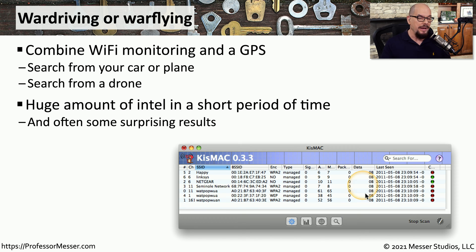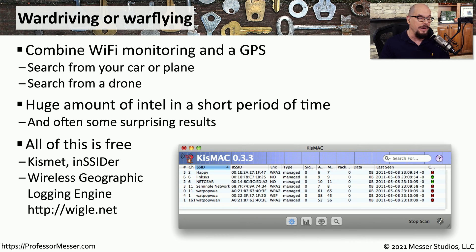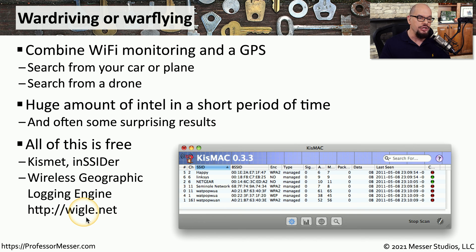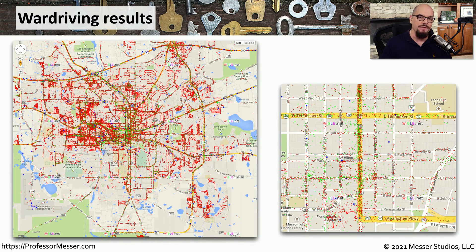Once we start accumulating information, we can find all of the SSIDs or wireless network names. We'll understand whether encryption is turned on or not with these particular networks, and you can get signal strength values to know just how far away an access point might be. All of this can be done for free using tools such as Kismet and Insider, which can gather this information and combine it with a map of the geography. You can see a combination of that at wiggle.net — W-I-G-L-E dot net — where you can see war driving results overlaid onto a map and drill down into any site for more information.